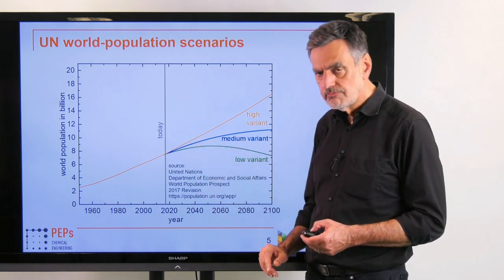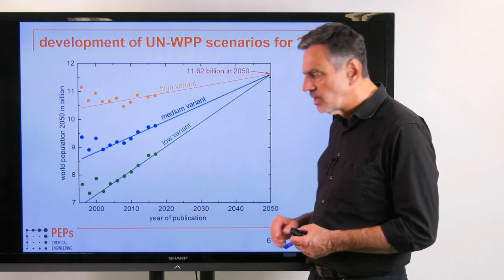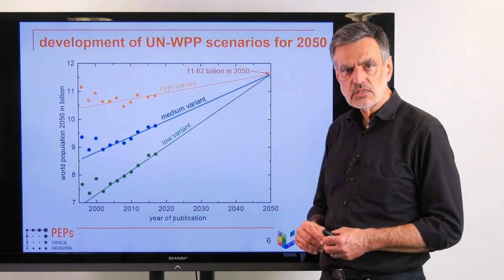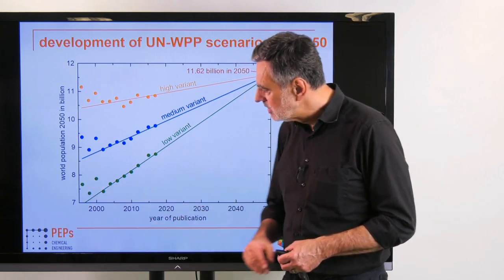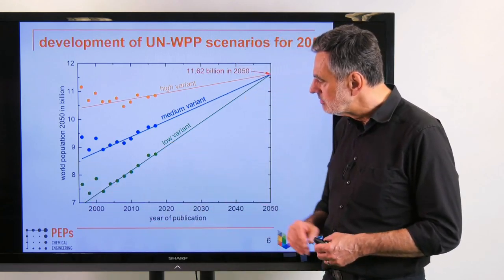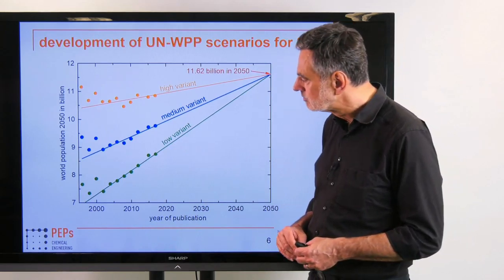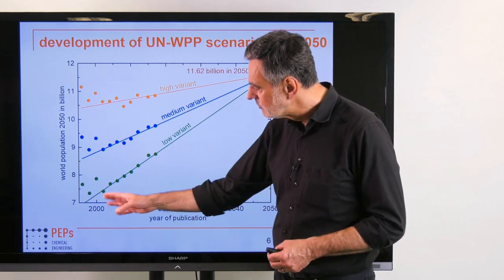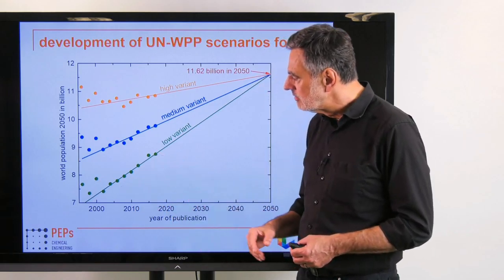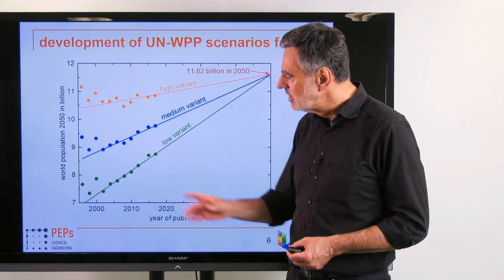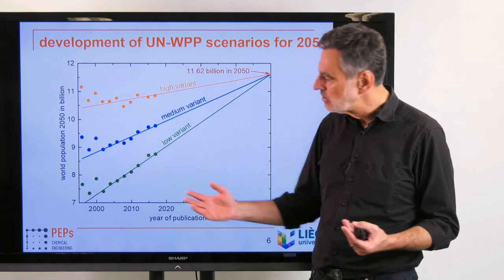Recently, probabilities were also published, confirming that the medium variant is the most likely scenario to occur, while the other two are essentially very unlikely. That spread covers the entire range to be expected, even up to very extreme values.